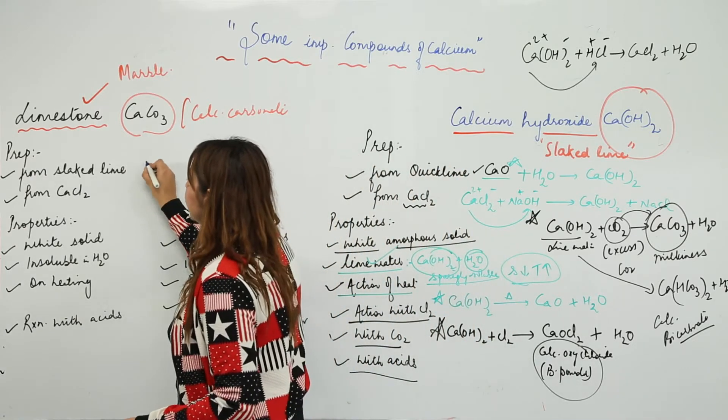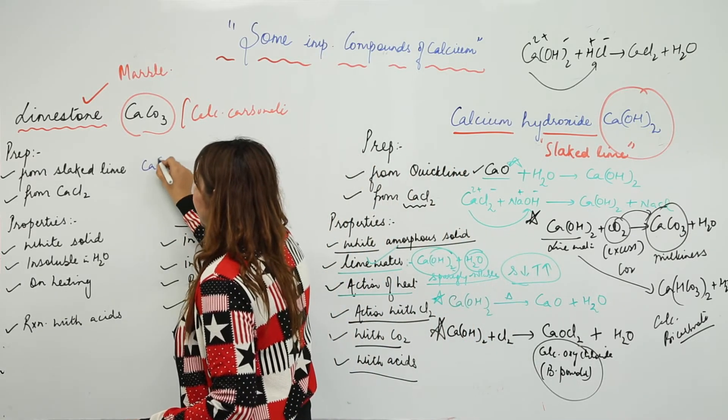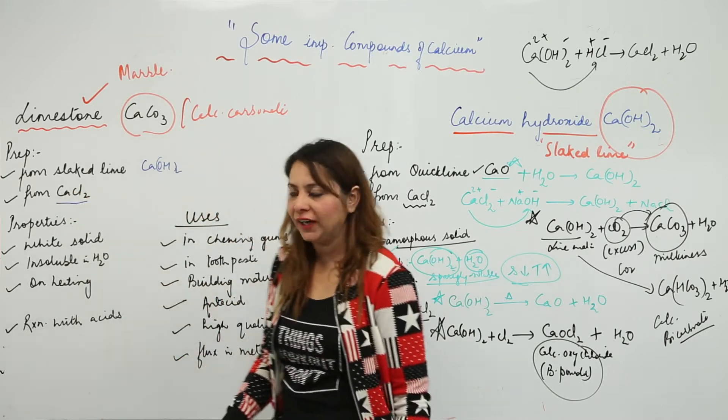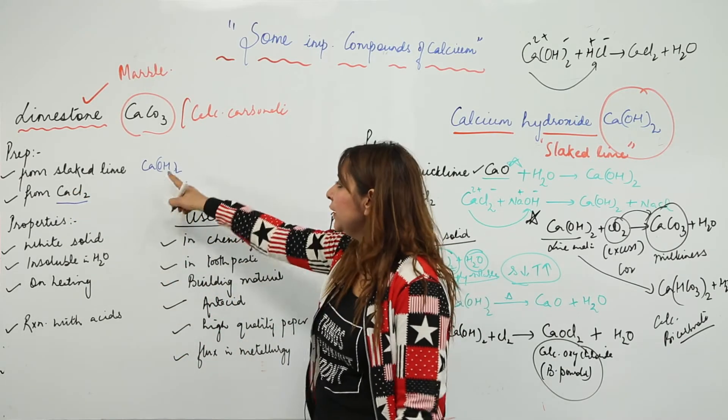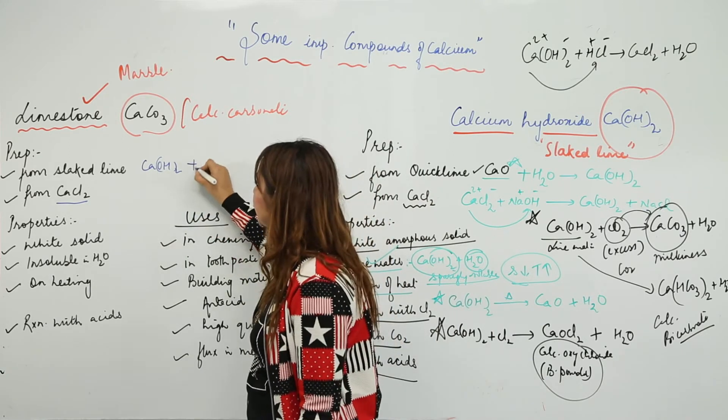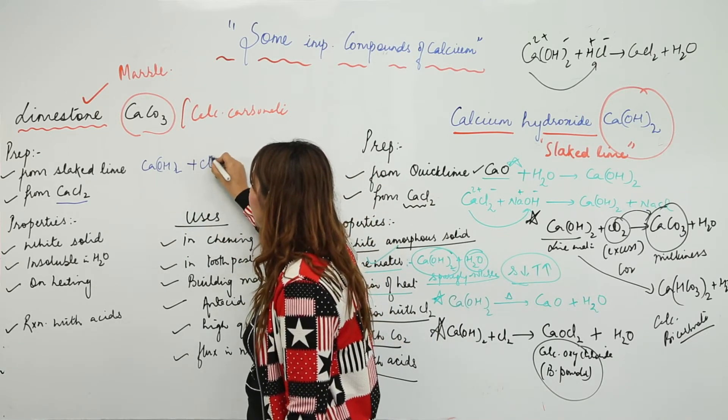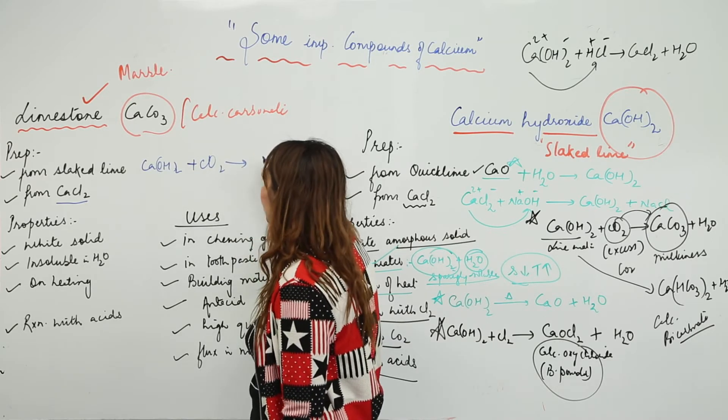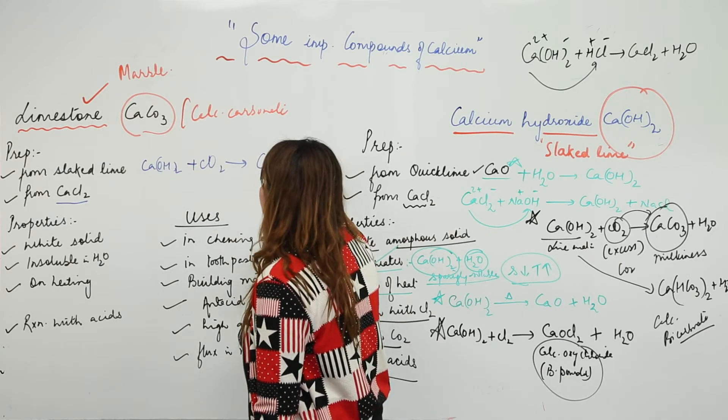Let us prepare it first by using slake lime. You have slake lime, Ca(OH)2. You need to pass carbon dioxide gas through it, and when you do that, you get calcium carbonate, which is limestone that we were looking for, along with water.